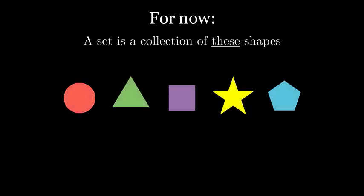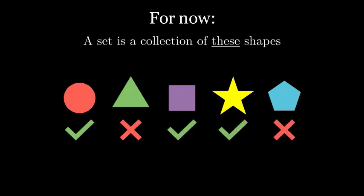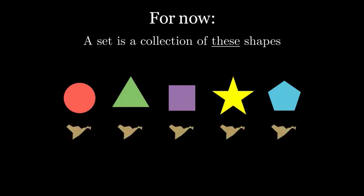A set, in this case, is any collection of these five shapes. For each shape, we could choose to either include it, or not. I could also choose to include all of them, or none of them.